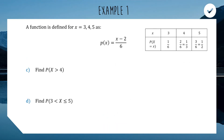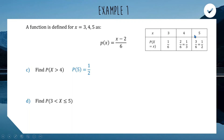For part c, we find the probability of an outcome greater than four. Only the outcome five satisfies this, and P(5) = 1/2. For part d, we find P(3 < x ≤ 5), which excludes three but includes four and five. So we add P(4) = 1/3 and P(5) = 1/2, giving a total probability of 5/6.